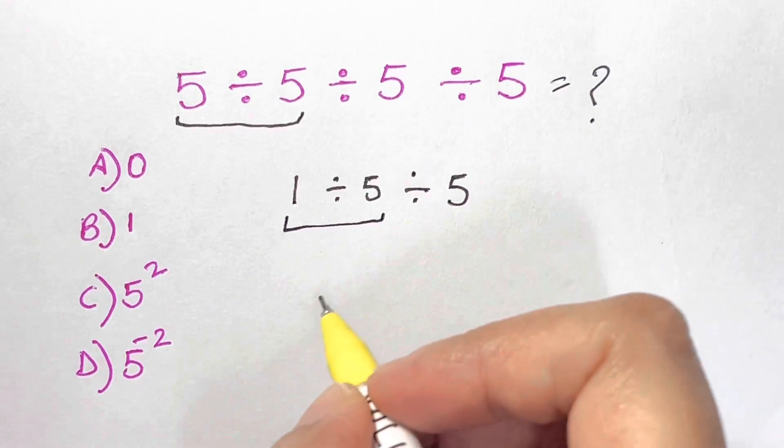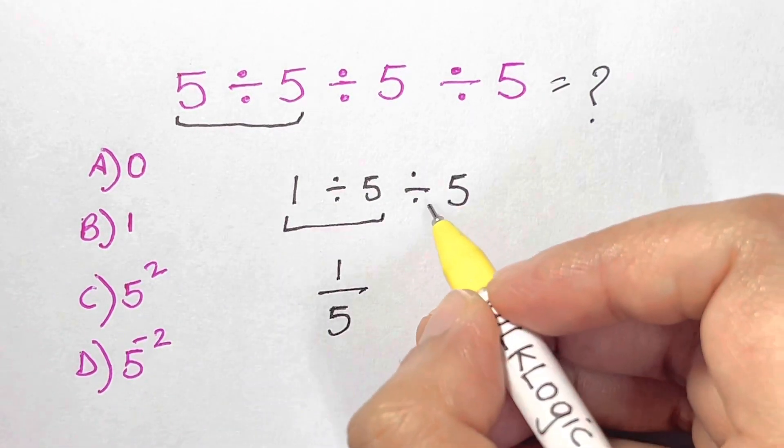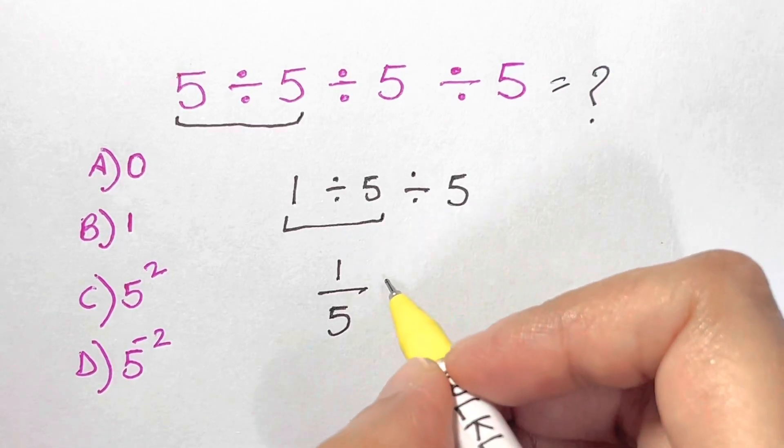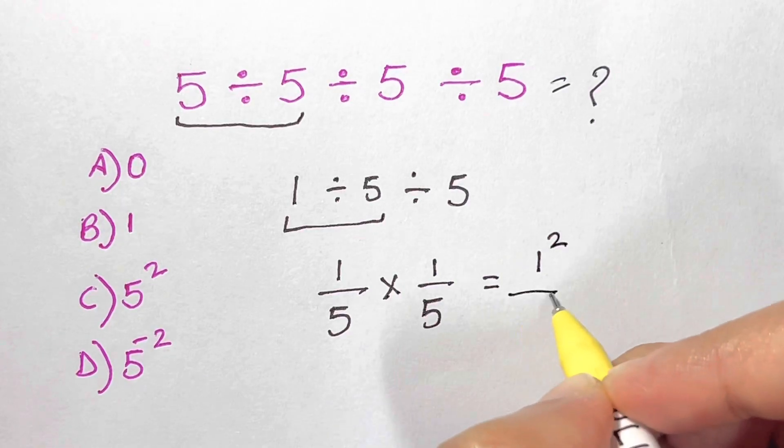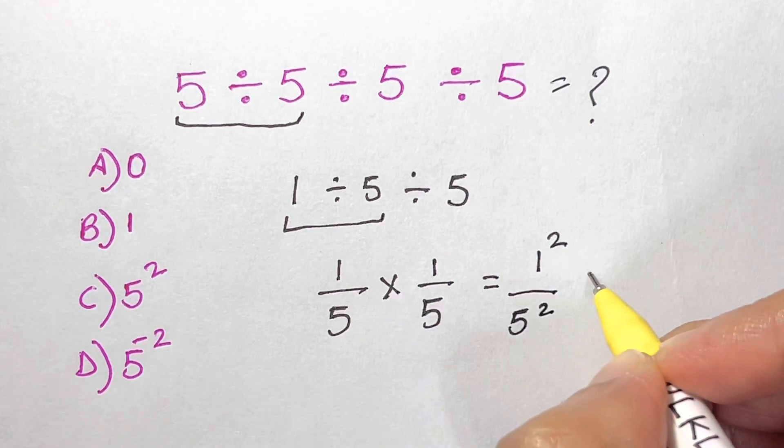Now again from the left-hand side, 1 divided by 5, I'm going to write it like this: 1 divided by 5, and this divided by 5 turns into times 1 over 5. And that's equal to 1 squared over 5 squared, which can be written as 1 over 5 the whole squared.